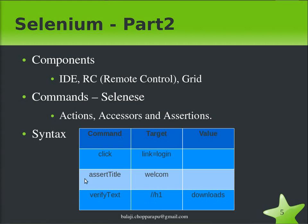Commands can be classified in three ways: Actions, which perform a particular action; Accessors, which help you read the contents of an element; and Assertions, which help you validate whether particular data is present or not. For example, 'assertTitle' is a simple assertion to check whether the welcome page title is 'welcome' or not, and a click command executes a click on a login link — typically an anchor tag.